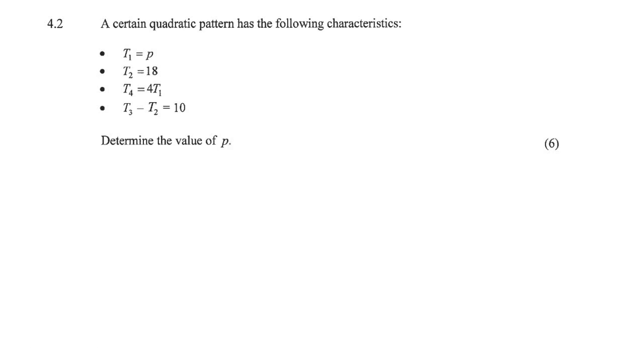So we know that term 1 is P, term 2 is 18, and term 4 is 4 times term 1. We don't know what term 3 is, but we know that term 4 would be 4P, because they said that term 4 is 4 times term 1, and term 1 is P.